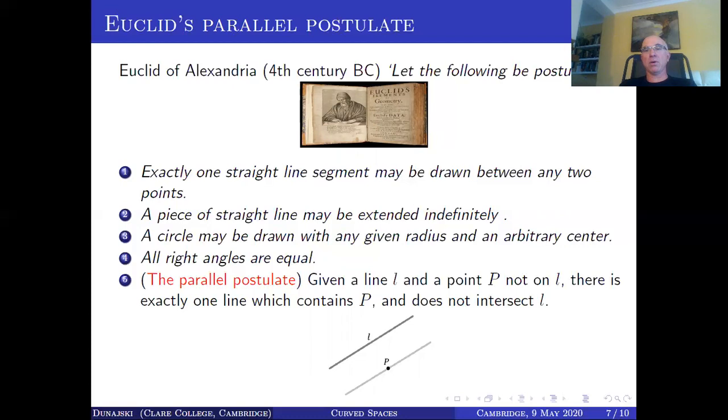And then the fifth axioms known as the parallel postulate states this. Given a line L and the point P not on the line L, there is exactly one line which contains P and doesn't intersect L. So on this diagram you have L and you have P and the light gray line is the unique line of Euclid's axiom. Now this fifth axiom caused controversies, which lasted for over 2,000 years. You see, if you have a set of axioms, you would like to know if they're really independent. So can it be that the fifth axiom in fact can be deduced from the first four and didn't have to be put by hand in the first place? It turns out that Euclid was right, because there is an example of geometric geometry. We now call such geometries non Euclidean where only the first four axioms hold, but not the fifth one.